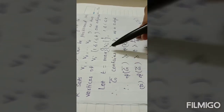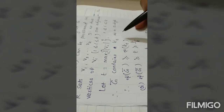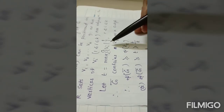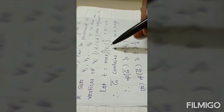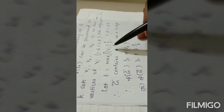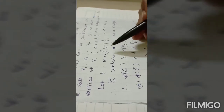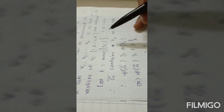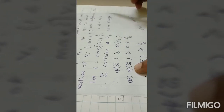Obviously, G̅ contains K_T as a subgraph. Since the vertices in each Vi are non-adjacent in G, they must be adjacent in G̅. And since T is the maximum cardinality among the Vi's, G̅ contains K_T as a subgraph.